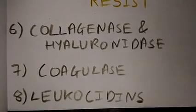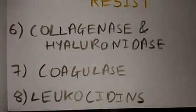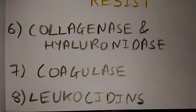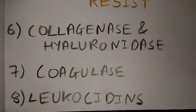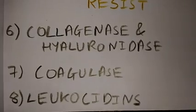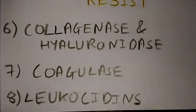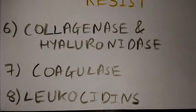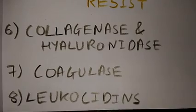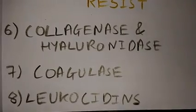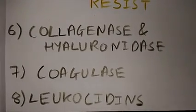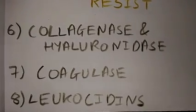Coagulase is produced by Staphylococcus aureus. It accelerates the formation of a fibrin clot around the bacteria, thus preventing phagocytosis. Lastly, leucocidins can destroy neutrophilic granulocytes and macrophages.